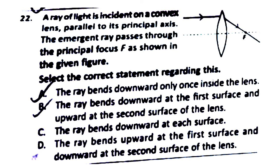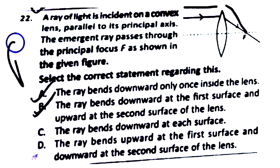Question 22: A ray of light is incident on a convex lens parallel to its principal axis, and the emergent ray passes through the principal focus as shown. The ray bends downward at the first surface, then bends again at the second surface and moves in the forward direction through the focus. The right answer is Option B.